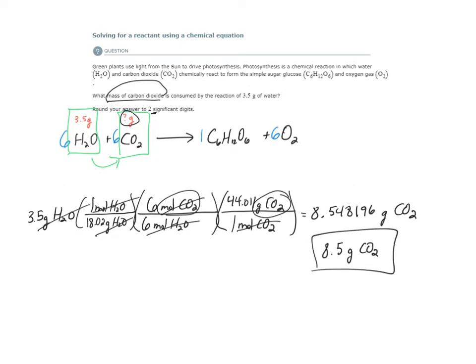Let's interpret this answer. If I have 3.5 grams of water, I'm going to need 8.5 grams of CO2 to react fully with this 3.5 grams of water, meaning all of this, there's enough CO2 for all of this water to be consumed. Once all of this mass of water is gone, the CO2, the 8.5 grams of CO2 will also be used up, and the reaction will stop.